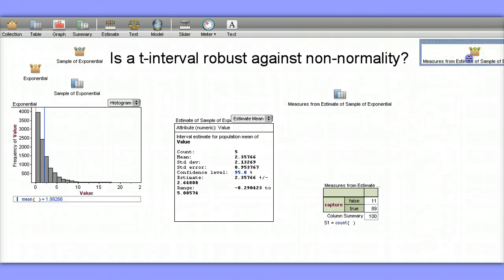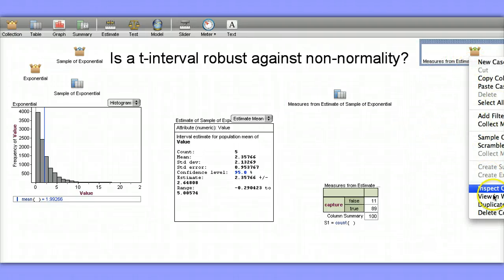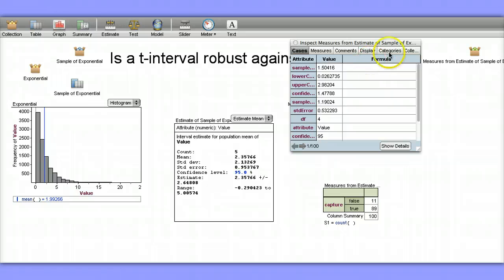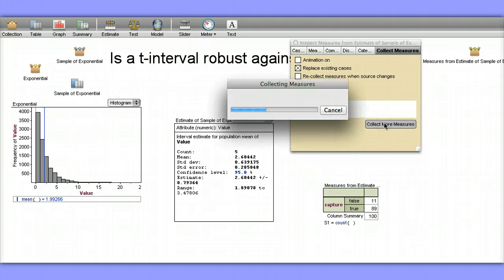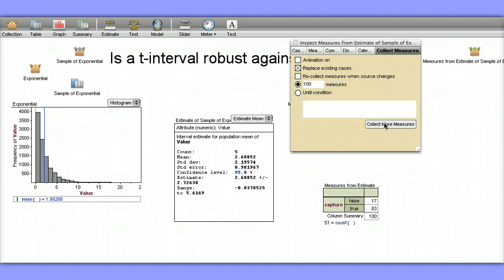I'll go here to inspect collection, over here to collect measures. Let's collect 100 measures, creating once again 100 confidence intervals. We'll replace what's there and say collect more measures. And we'll see again, not close to 95%, 83% of the intervals captured the truth.